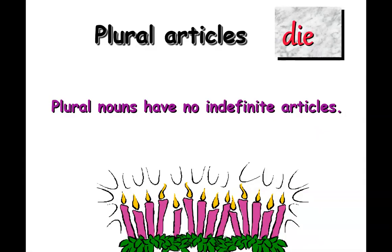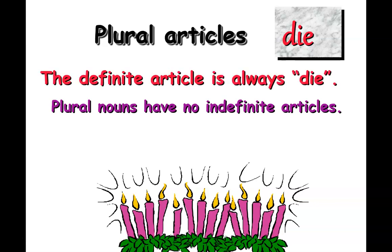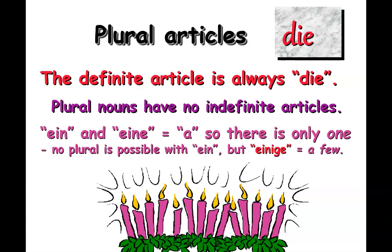In plural, the articles are always going to be 'die.' You cannot have an indefinite article for plurals, because you can't have one of something that is many. You wouldn't say 'I read a books.' You could say 'I have no books' or 'I have a few books' — 'einige' — but there is no indefinite article for plurals.